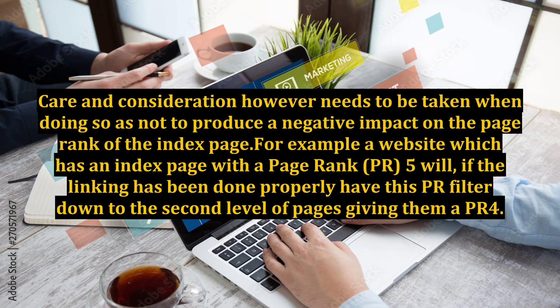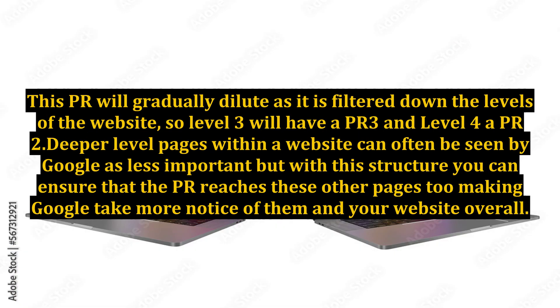Care and consideration needs to be taken when doing so, as not to produce a negative impact on the page rank of the index page. For example, a website which has an index page with a page rank PR5 will, if the linking has been done properly, have this PR filtered down to the second level of pages, giving them a PR4. This PR will gradually dilute as it is filtered down the levels of the website, so level 3 will have a PR3 and level 4 a PR2.